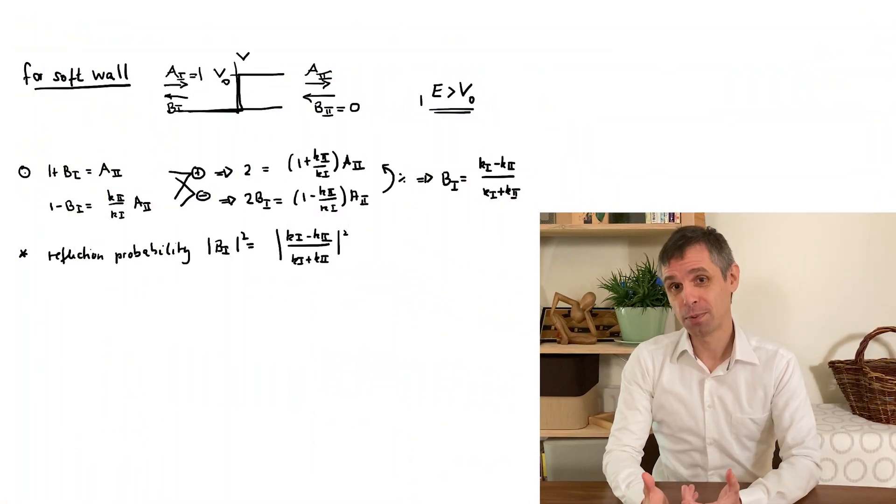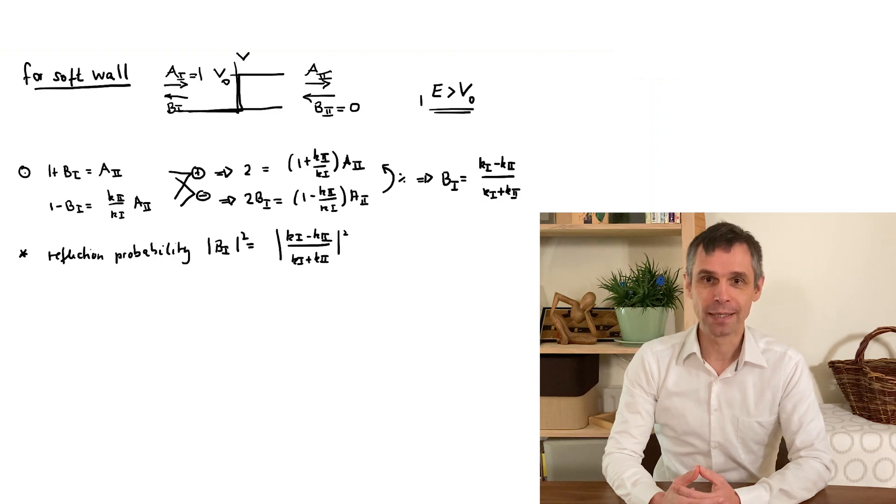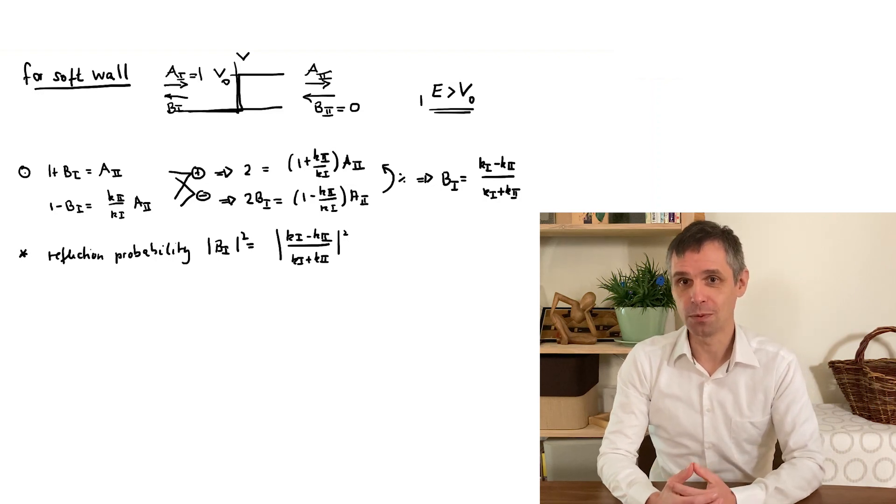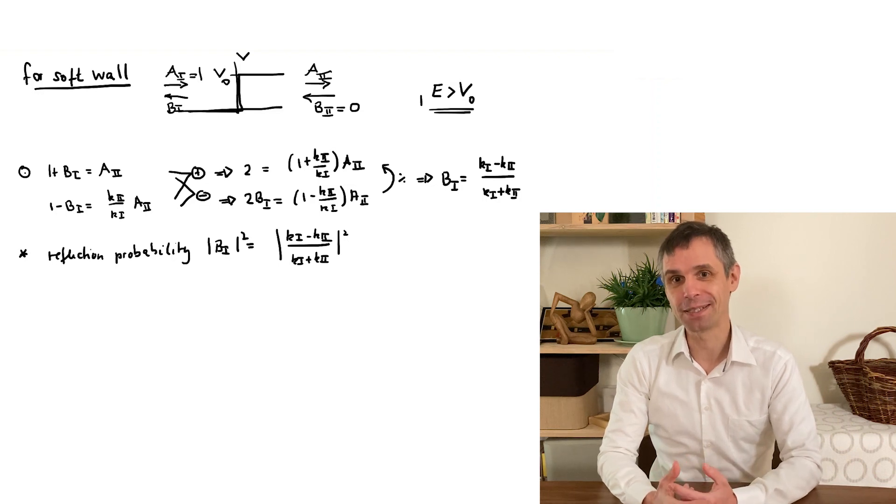Okay, now to wrap this segment up, let's see what we get for the transmission probability for the soft wall. Here I just copied our derivation of the coefficients from above, and so we can now take this reflection coefficient b1 and interpret its absolute value squared confidently as the reflection probability.